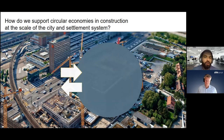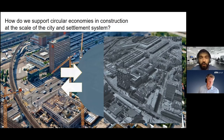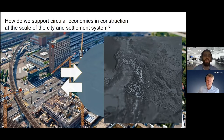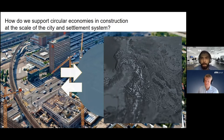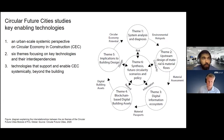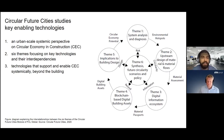This implies a need to understand and support material flows — the inputs and outputs between buildings and the urban circular economy system. It also implies the need to study the systemic properties of circular economies in construction at a much larger scale, looking at cities and the resources in their surroundings, and understanding and supporting the emergence of sustainable material flows in settlement systems. Circular Future Cities as a module of FCL Global studies key enabling technologies that focus on this more urban systemic perspective.